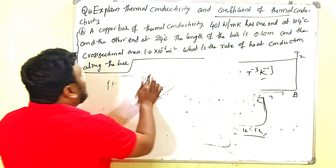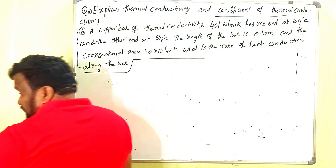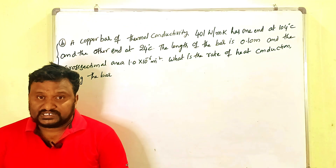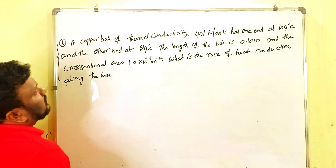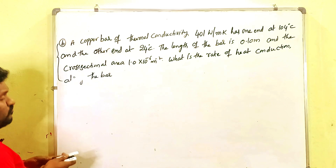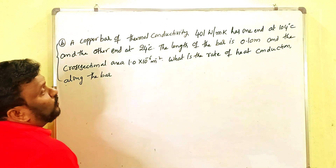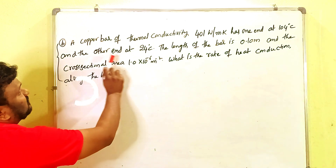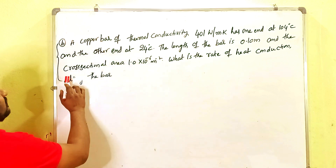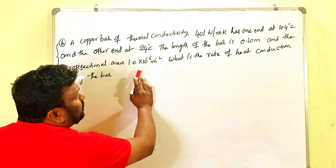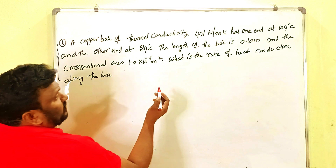Now let us go to the problem from the advanced question paper. A copper bar of thermal conductivity 401 W m⁻¹ K⁻¹ has one end at 104°C and the other end at 24°C. The length of the bar is 0.10 m and the cross-sectional area is 1.0 × 10⁻⁶ m². What is the rate of heat conduction along the bar?